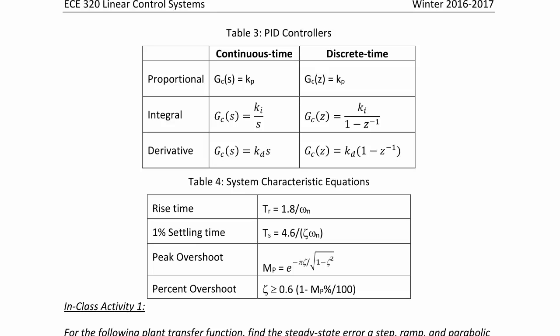Some system characteristic equations needed for design are: rise time equals 1.8 over the natural frequency; 1% settling time equals 4.6 over ζ·ωn; and the 2% settling time equals negative 4T over the natural log of the magnitude of the pole — the pole closest to the unit circle will dominate the overall settling time. Peak overshoot is e^(−πζ / √(1−ζ²)), and for percent overshoot we use ζ ≥ 0.6 times (1 minus percent overshoot divided by 100).